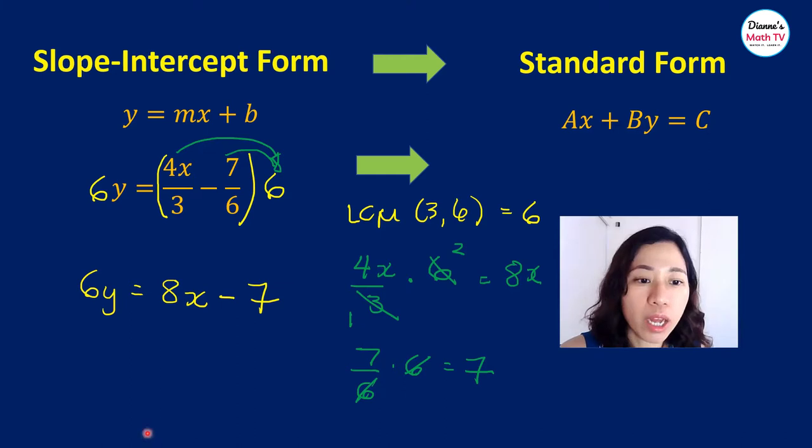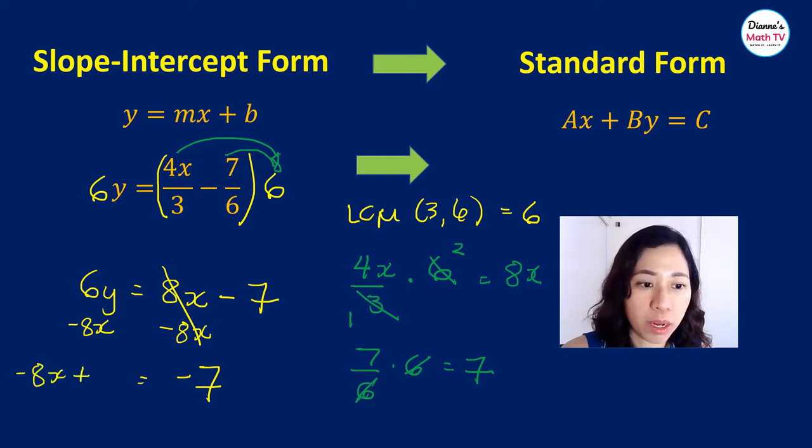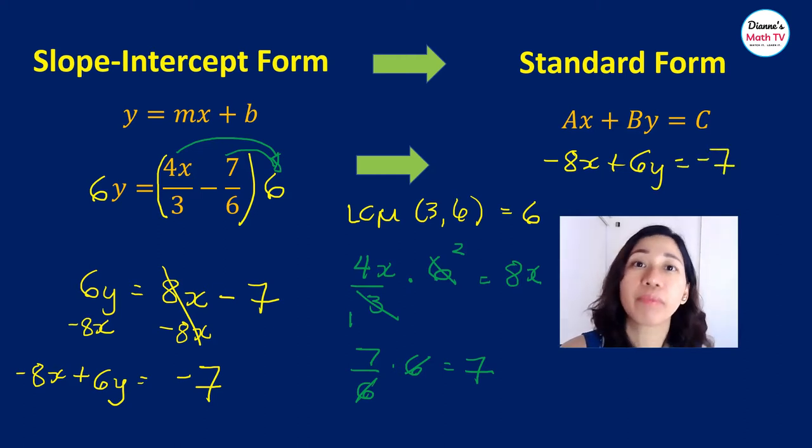Next, we want to put this term over here. So how do we do that again? If I have an 8x here, we subtract 8x on both sides. So 8x minus 8x is 0. We're left here with negative 7. And then over here, I will write this as negative 8x plus 6y. There you go, that's our standard form. Negative 8x plus 6y equals negative 7.